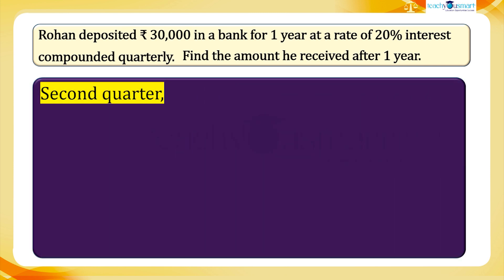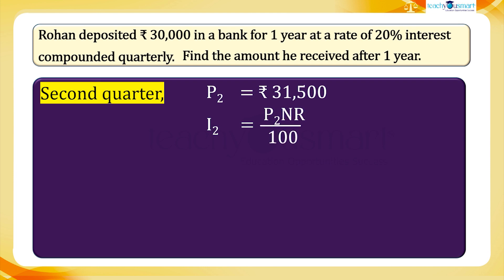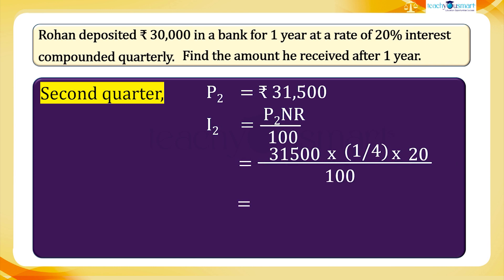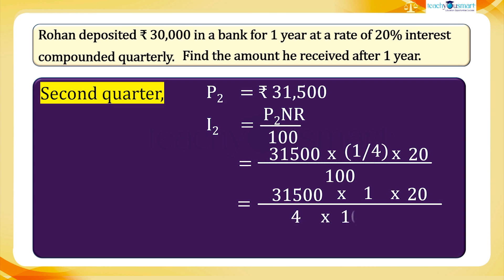For the second quarter, principal P2 equals 31,500 rupees. Therefore, interest for the second quarter: I2 equals P2 × N × R divided by 100, equals 31,500 × (1/4) × 20 divided by 100, equals 31,500 × 1 × 20, whole divided by 4 × 100. I2 equals 1,575 rupees.